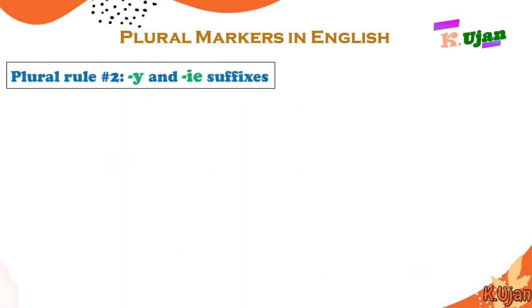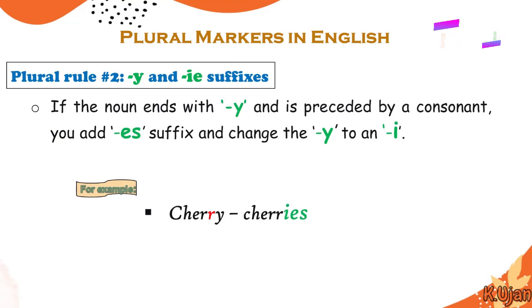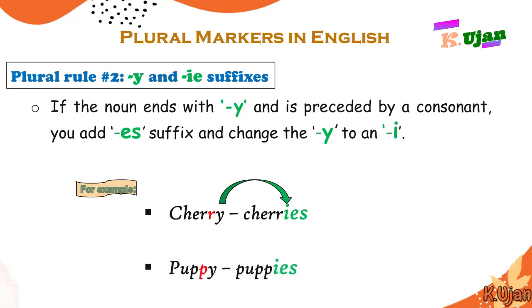Here is plural rule number 2: the Y and IE suffix. If the noun ends with Y and is preceded by a consonant, you add the -ES suffix and change the Y to an I. For example, cherry ends at Y, and before that Y there is R — a consonant — so we change Y to I and add ES: cherry/cherries. Similarly, puppy becomes puppies.